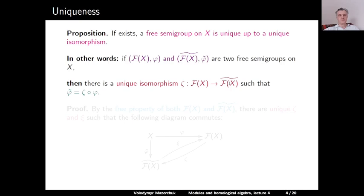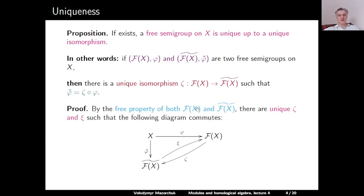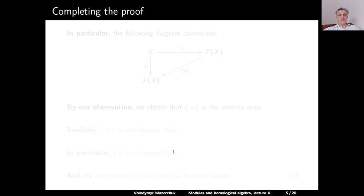Proof. Since both F(X) and F̃(X) are free semigroups, we consider the following diagram. We have the map φ from X to F(X) and the map φ̃ from X to F̃(X). Since F(X) is a free semigroup, there exists a unique map ζ from F(X) to F̃(X) such that ζ after φ equals φ̃. Since F̃(X) is a free semigroup, there exists a unique map ξ from F̃(X) to F(X) such that φ equals ξ after φ̃. In particular, composing ζ and ξ, the following diagram commutes.